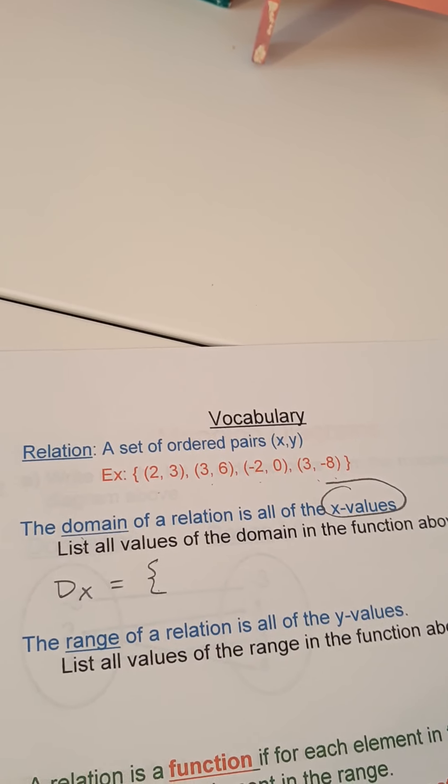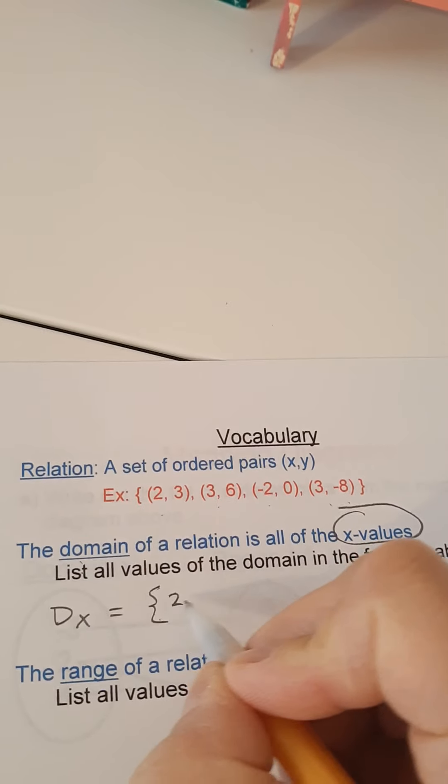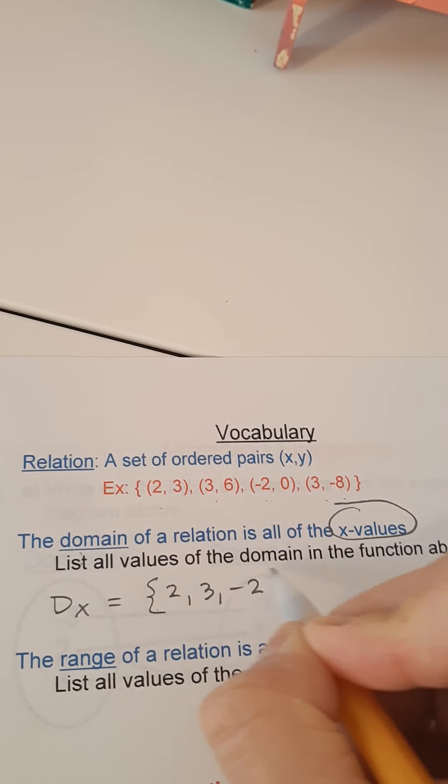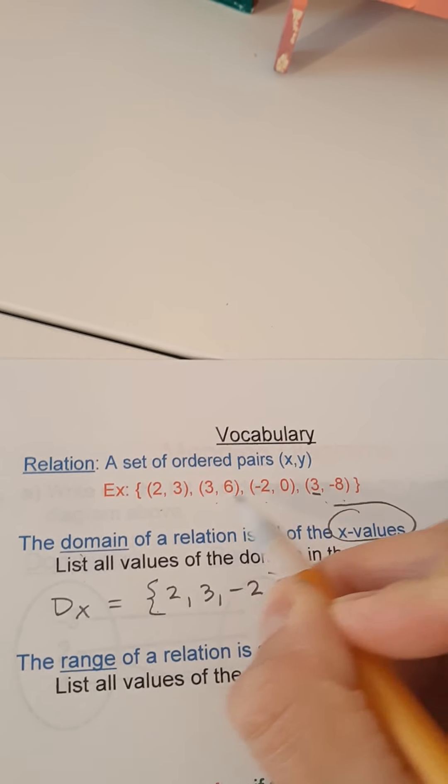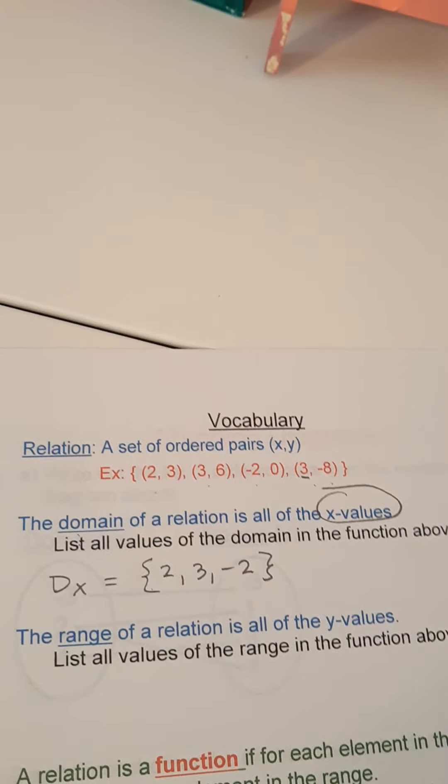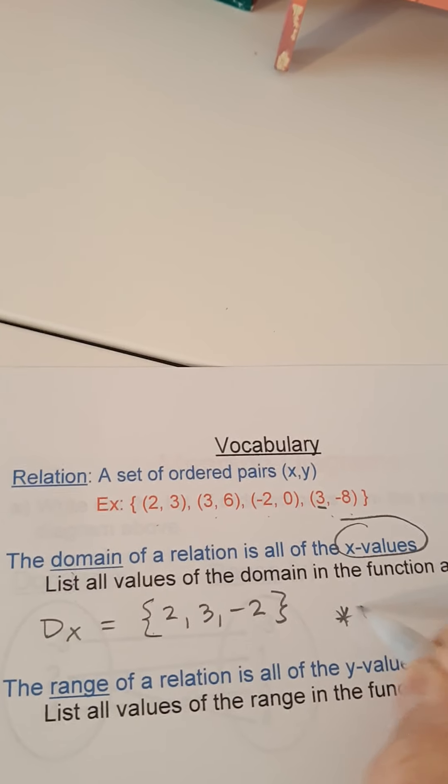Domain can be abbreviated d subscript x, so the domain is all the x values so that would be 2, 3, negative 2, and while there's another 3, you don't write them twice. So you don't write repeats.